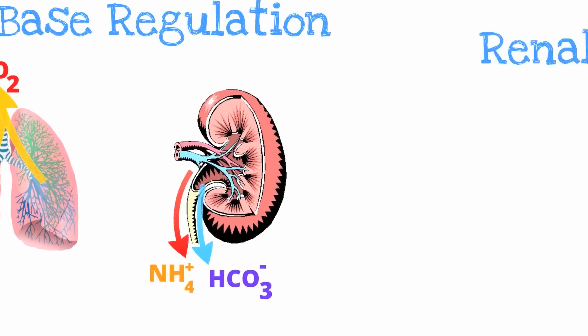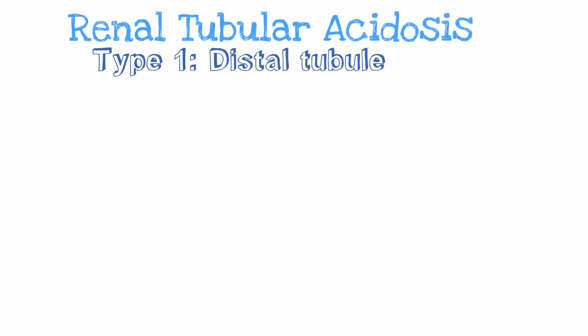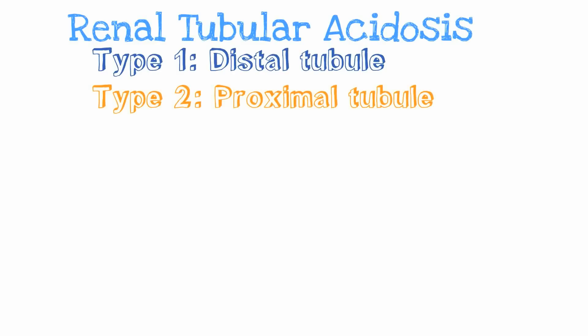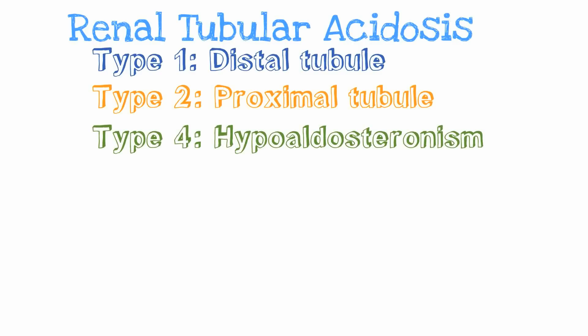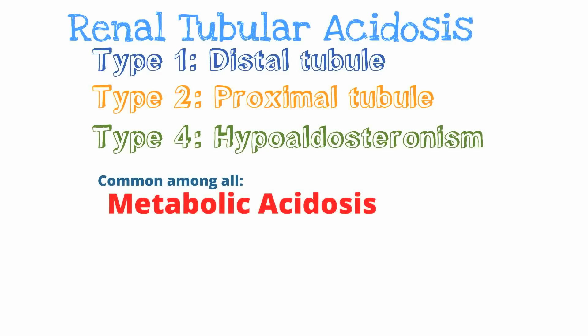There are three types of renal tubular acidosis. They are type 1, which affects the distal convoluted tubule; type 2, which affects the proximal convoluted tubule; and type 4, which is due to hypoaldosteronism or a low aldosterone state. A type 3 RTA does exist but it is extremely rare and is caused by an enzyme deficiency. I would not focus on type 3 RTA — really pay attention to types 1, 2, and 4.